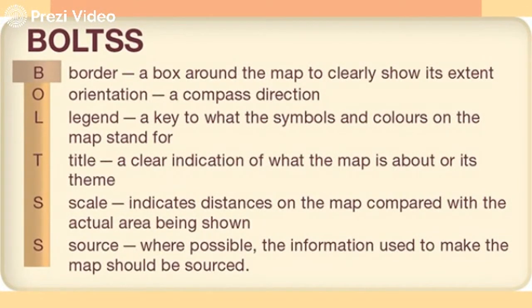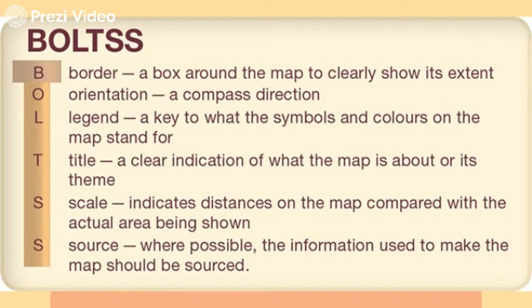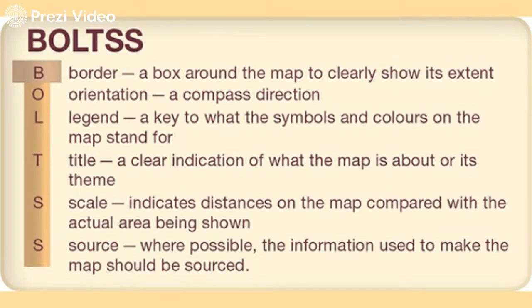I'm going to show you this picture here to explain exactly what BOLTS is. The B in BOLTS stands for border — this is a box around the map to clearly show its extent. O stands for orientation, a compass direction, so that's basically north, south, east and west. The L stands for legend, which is a key to what the symbols and colours on the map stand for.